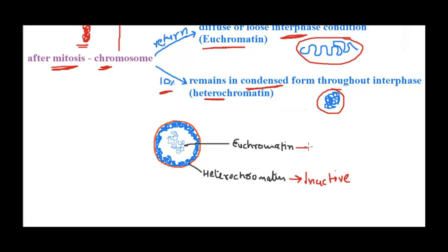In the center of the nucleus you can see lightly stained, thin strand-like structures — that is euchromatin, the active form of chromatin. Heterochromatin is darkly stained because it is highly condensed and takes up a lot of stain, whereas euchromatin is less condensed and thus lightly stained. Heterochromatin is located near the nuclear envelope because the periphery region is a transcriptionally inactive region, while the center of the nucleus is where transcription occurs.